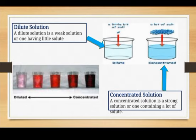A dilute solution contains one tablespoon of sugar, while a concentrated solution contains five tablespoons of sugar or salt. You can take the example of rooh afza, which we drink in Ramadan. A glass with one tablespoon of rooh afza will be light red in color, but a glass with three tablespoons of rooh afza will be dark red in color — the dark one is concentrated and the light one is diluted.